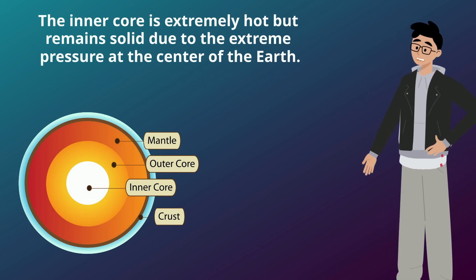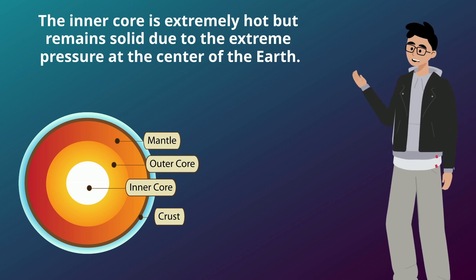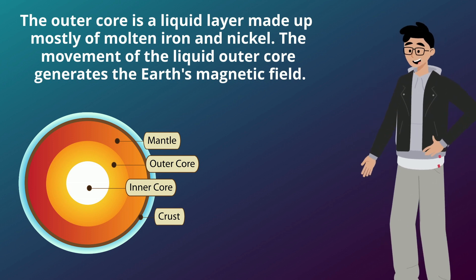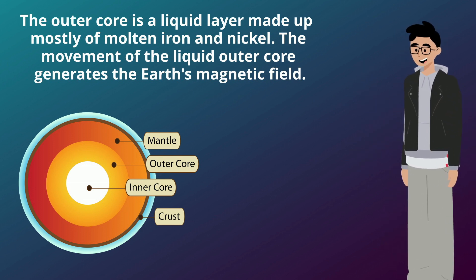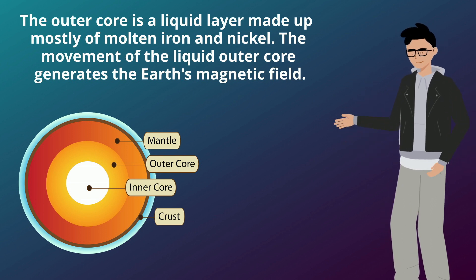The inner core is extremely hot but remains solid due to extreme pressure at the center of the Earth. The outer core is a liquid layer made up mostly of molten iron and nickel. The movement of the liquid outer core generates the Earth's magnetic field.